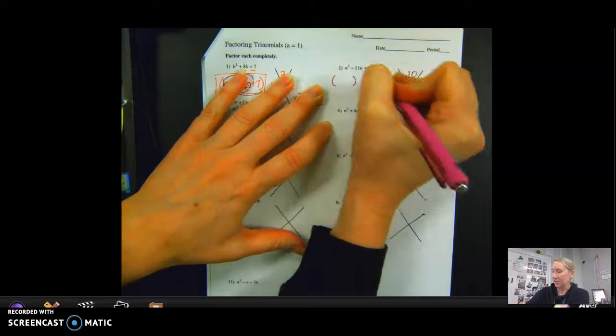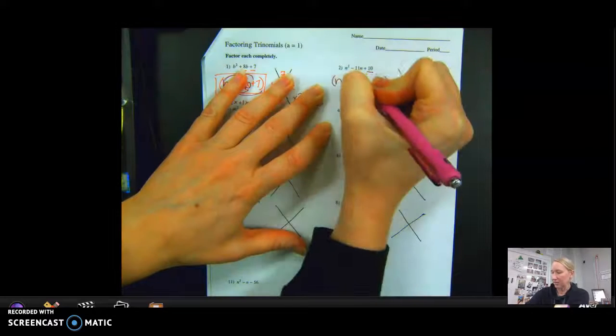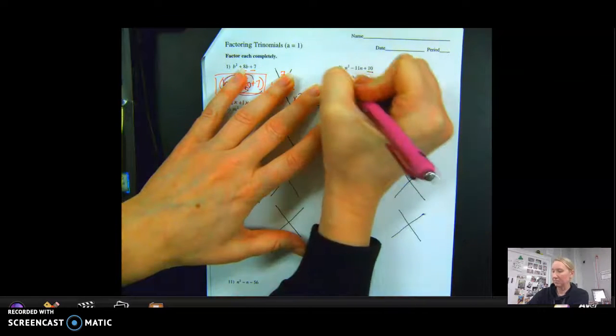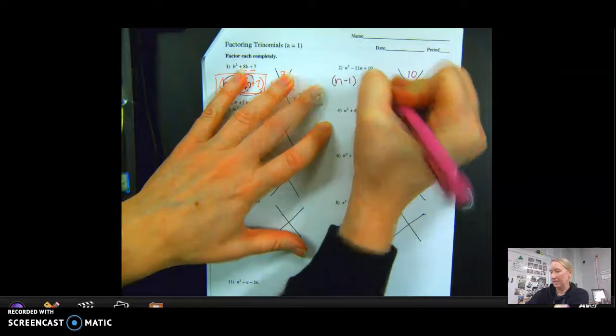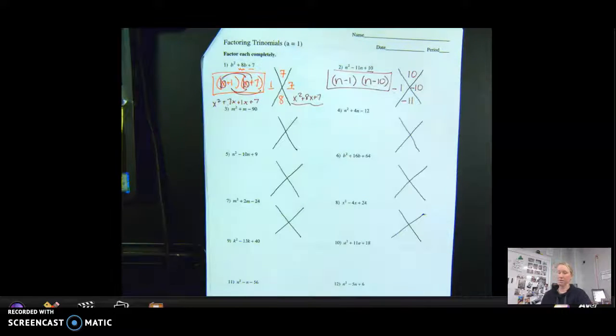So I put this in parentheses. I look at the letter, use the correct letter this time. So now we're using n, so this would be n minus 1, and n minus 10.